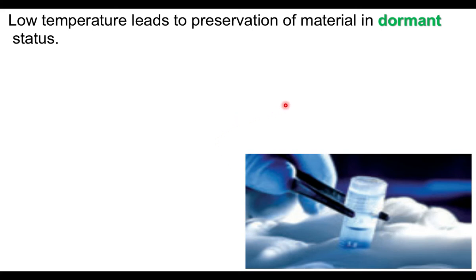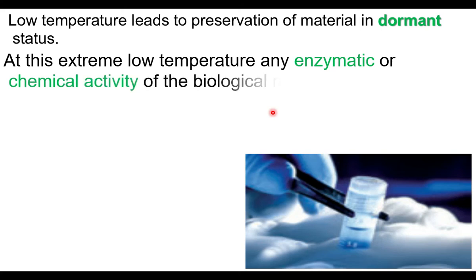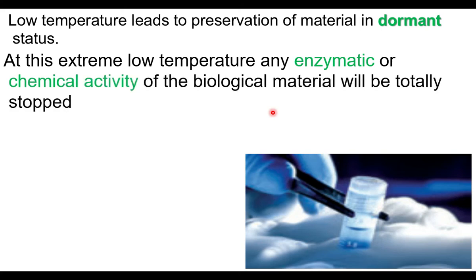Low temperature leads to preservation of materials in a dormant, or inactive, state. The low temperature makes seeds, protoplasts, and other materials inactive — there is no metabolic activity at low temperature. At this extreme low temperature, any enzymatic or chemical activity of the biological material is totally stopped, similar to how keeping fruits in a refrigerator stops ripening by reducing enzymatic activity.